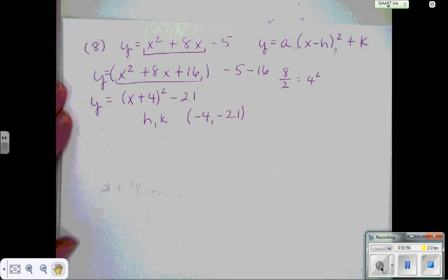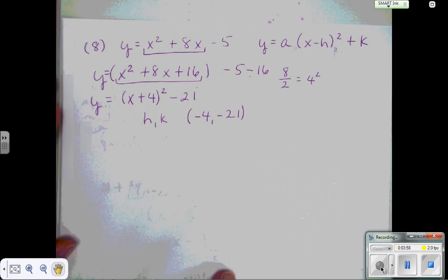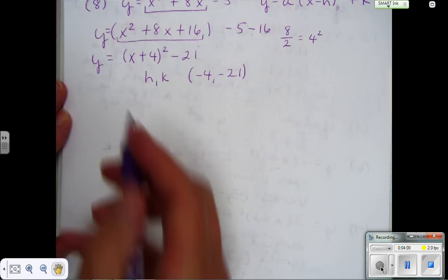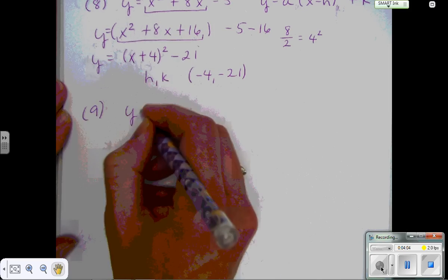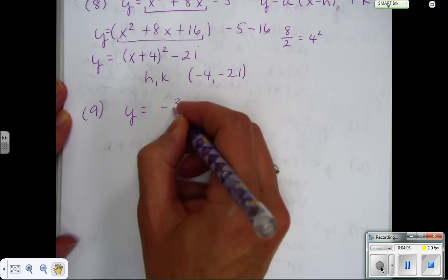Let's look at number 9. Number 9 is a little bit different because it has a coefficient other than 1 for its square term. So that one's going to be a little bit different.